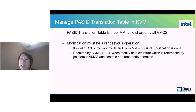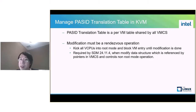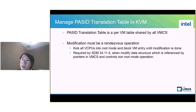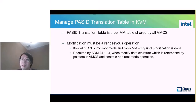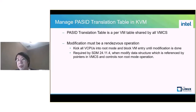The PASID translation table is a per-VM table shared by all vCPUs. Any modification to this table must be a read-new operation. That means KVM needs to kick all vCPUs into root mode and block VM entry until modification is done. This is a requirement from the SDM when modifying data structures referenced by pointers in VMCS that control non-root mode operation.